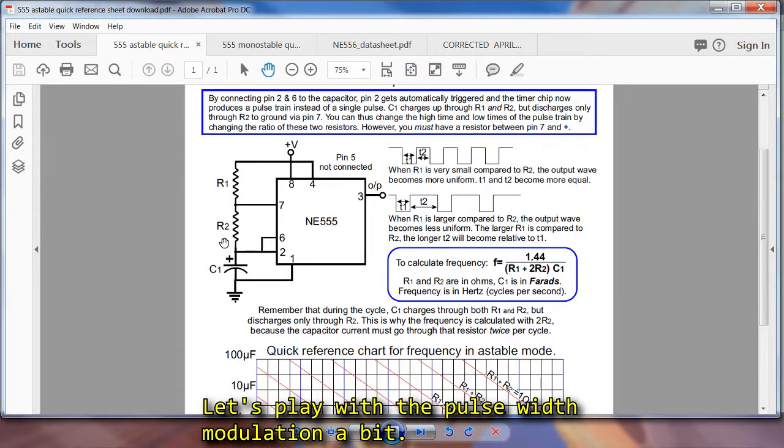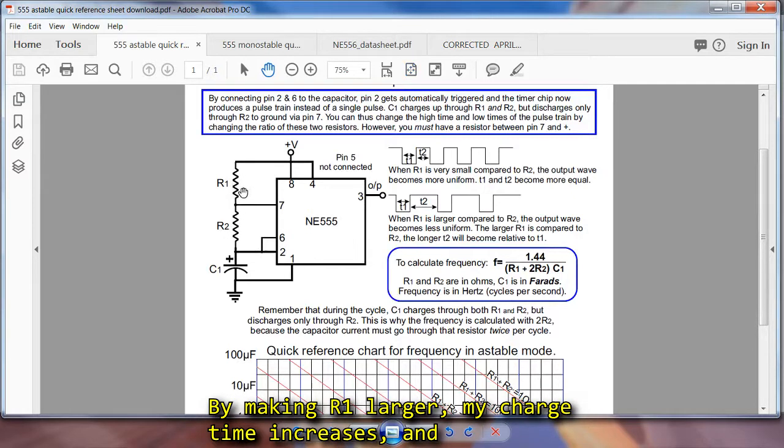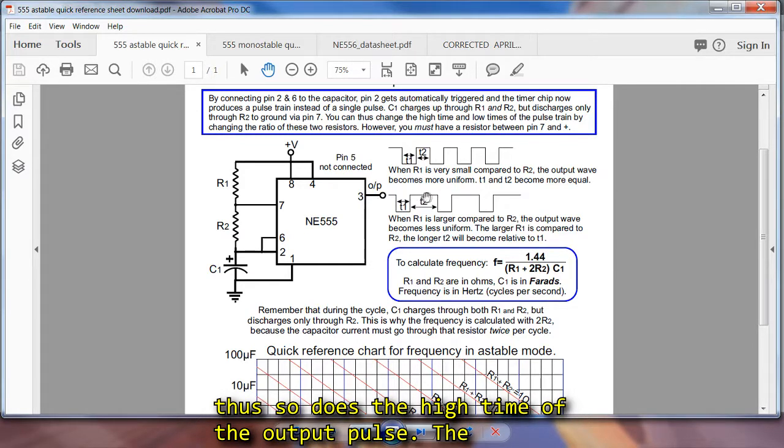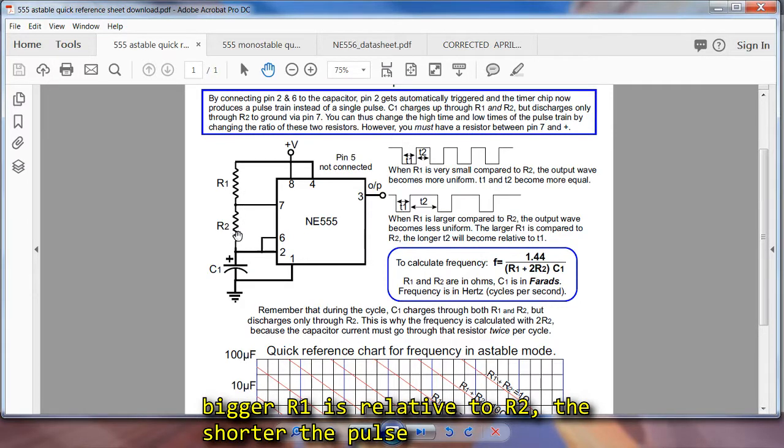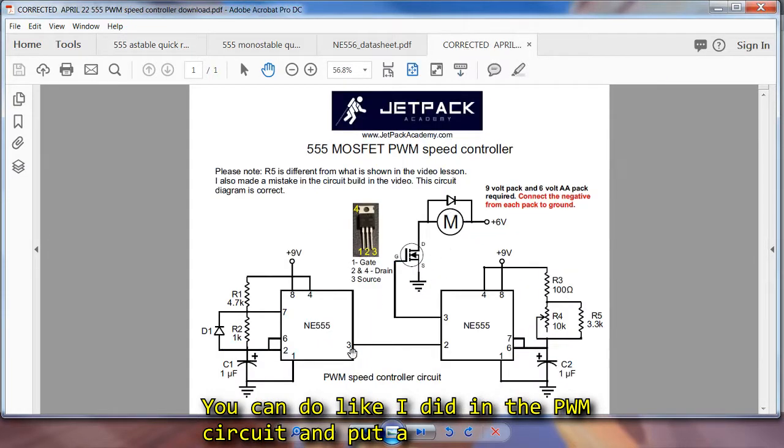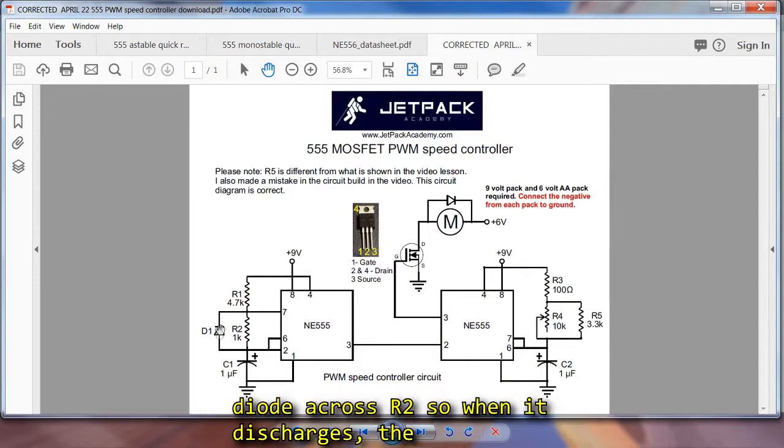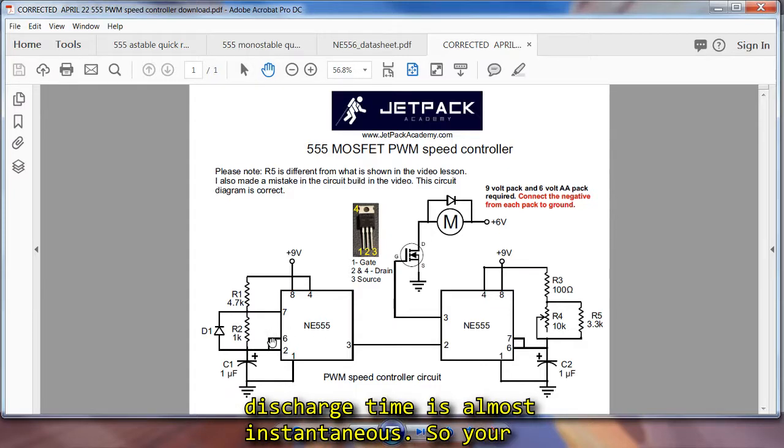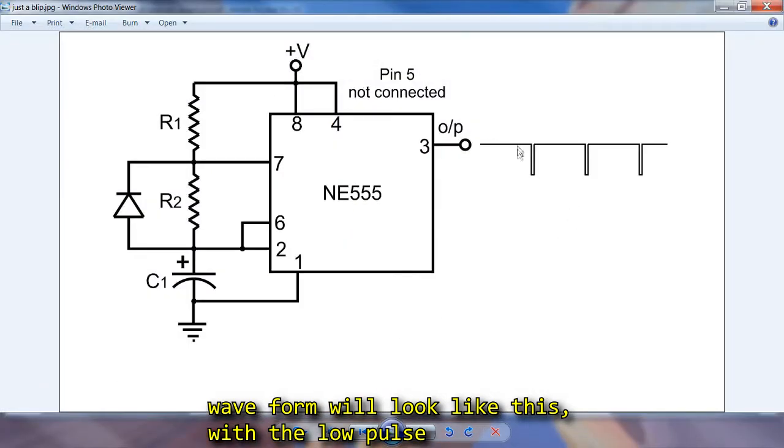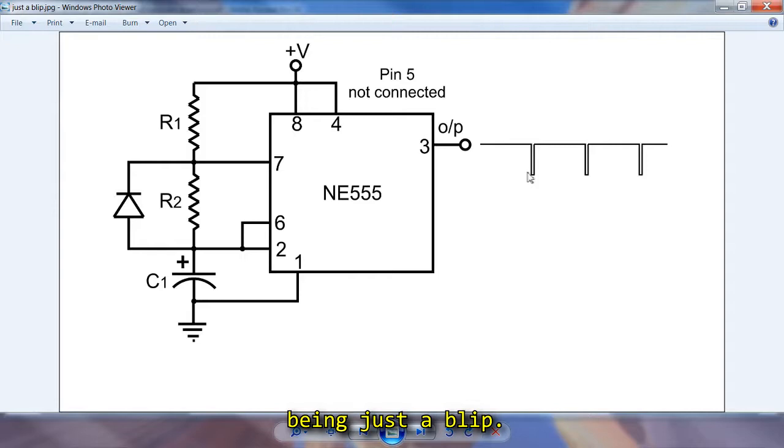Okay, let's play with the pulse width modulation a bit. By making R1 larger, my charge time increases. And thus, so does the high time of the output pulse. The bigger R1 is relative to R2, the shorter the pulse time gets, and the longer the high time gets. Now you can do like I did in the PWM circuit and put a diode right across R2. So when it discharges, the discharge time is almost instantaneous. So your waveform will look like this, with the low pulse being just a blip.